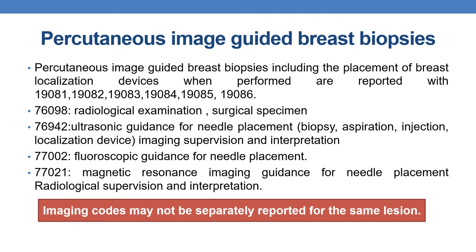Coming to percutaneous image guided breast biopsies: these include the placement of breast localization device when performed. They can be performed either with or without placement of a breast localization device. Whenever percutaneous image guided breast biopsies are done along with placement of breast localization devices, these codes must be reported additionally: 19081, 19082, 19083, 19084, 19085, and 19086.